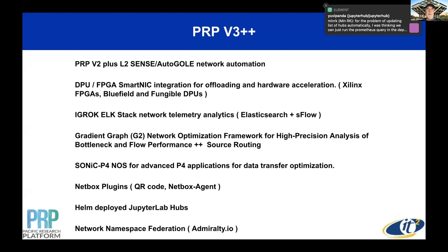We're working with Xilinx FPGAs, Bluefield 2 NICs, and Fungible DPUs. We've set up the IGROC elastic stack cluster — seven 100-gigabit-per-second connected nodes running Elasticsearch and sFlow. We've also integrated Reservoir Labs' Gradient Graph for bottleneck analysis. All of these tools consume REST APIs and produce REST APIs for node graph and other downstream processes.